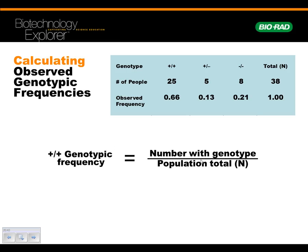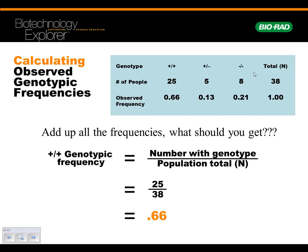Taking the number of people with the genotype — the genotype being plus-plus — so when I'm talking about genotypes, they're talking about: are you plus-plus, are you plus-minus, or are you minus-minus? They do the math, and if you add up all these frequencies, what would you expect? Well, it should add up to one — 100% of the people had some genotype, right? It just makes sense. Adding all those up to one will make sense on the next slide.